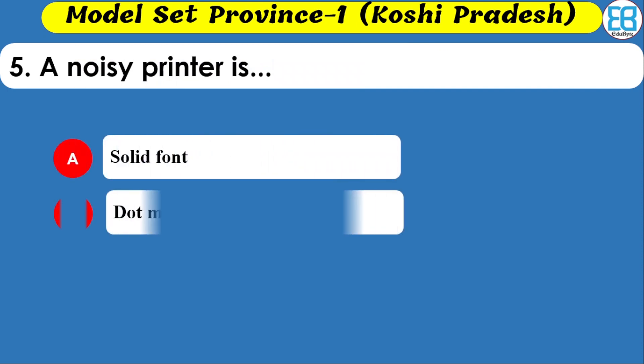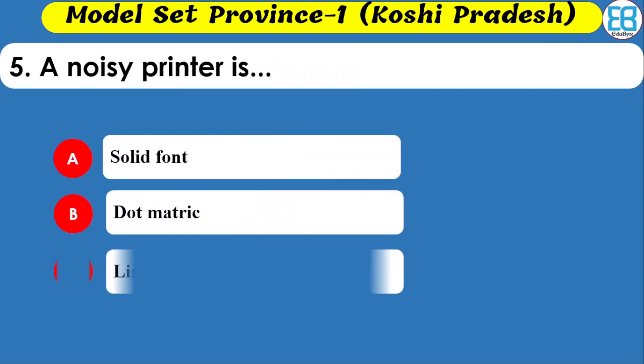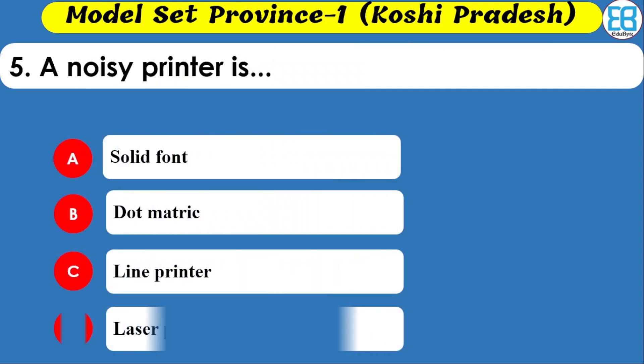Which of the following is a noisy printer? Options are dot matrix, line printer, and laser printer. The correct option is dot matrix printer.